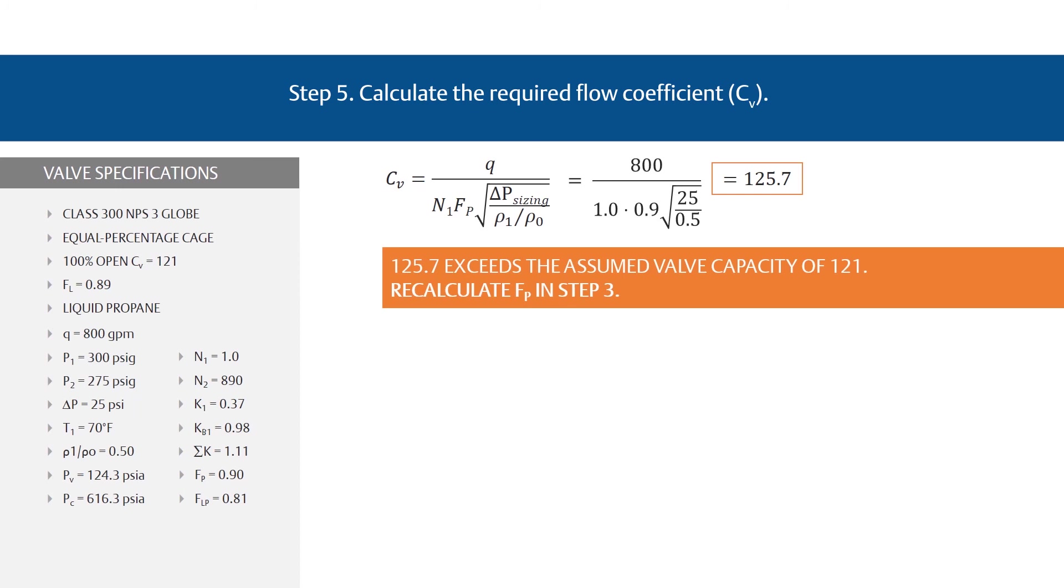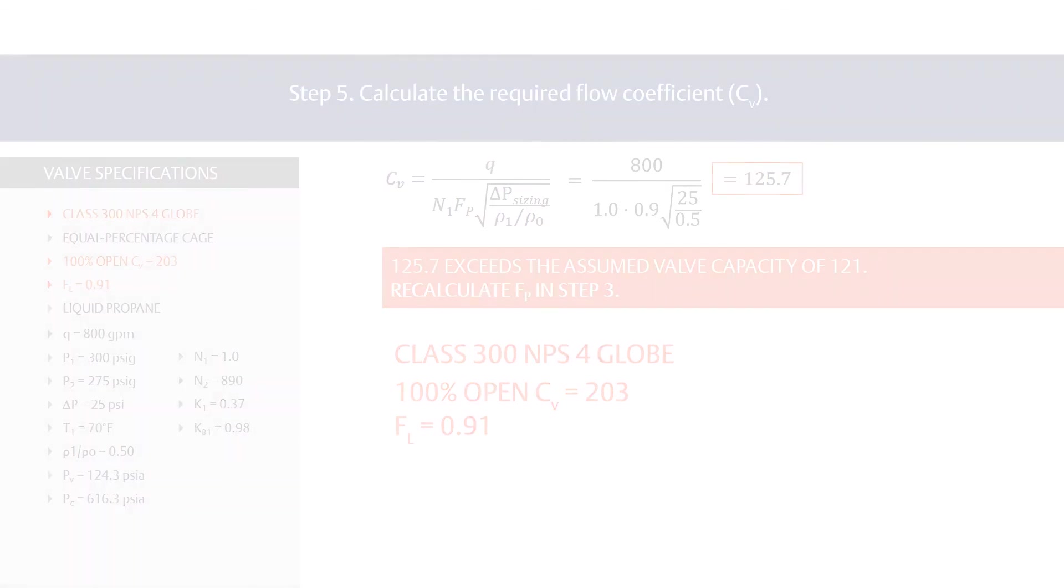For this example, it may be obvious that the next larger size valve with a 4-inch nominal pipe size, or NPS 4, would be the correct valve size. This may not always be true, and a repeat of the previous steps should be carried out. Now let's assume it's an NPS 4 valve with a CV of 203 and an F sub L of 0.91. These values were determined from the flow coefficient table for a class 300 NPS 4 Fisher ES globe valve with an equal percentage cage.